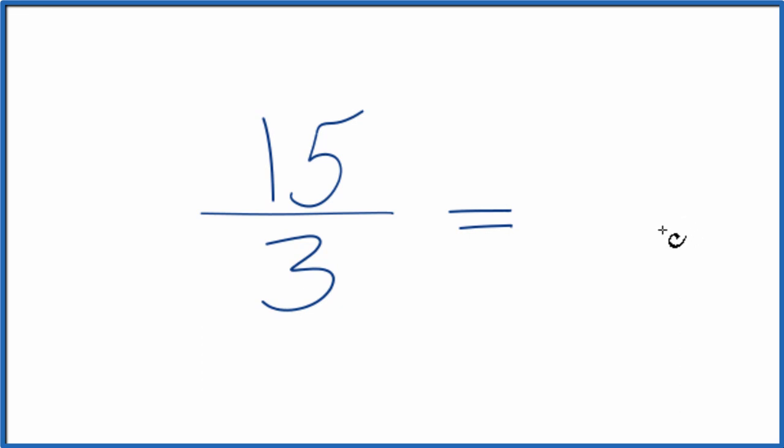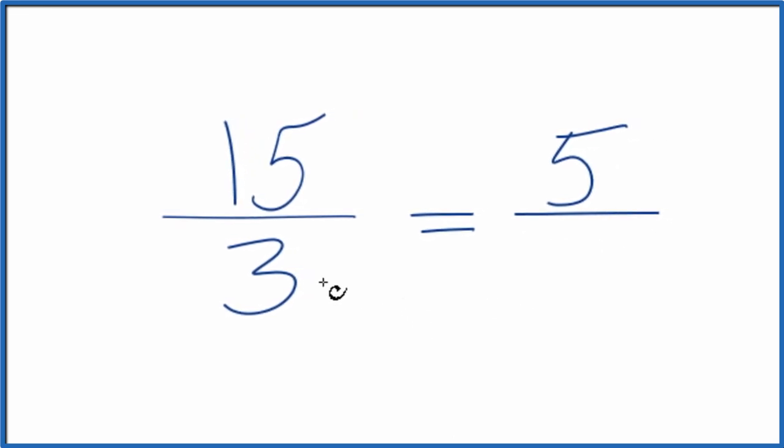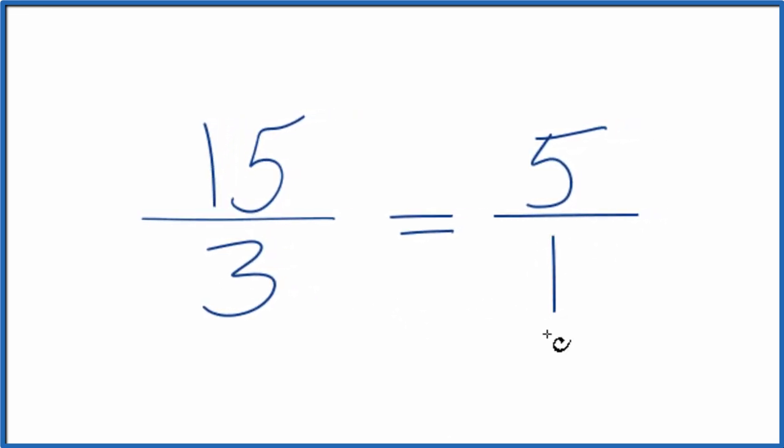What we're looking for is a common factor, the greatest common factor between 15 and 3. And it looks like 3 goes into 15 five times, and 3 goes into 3 one time. So the greatest common factor here is 3.